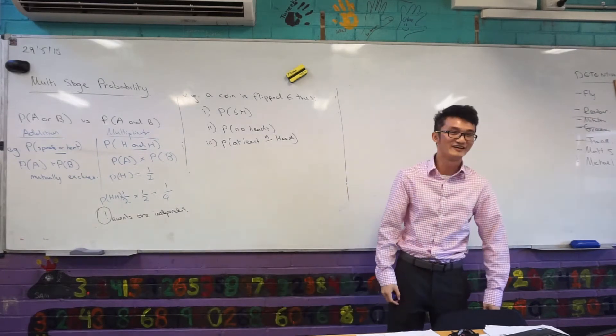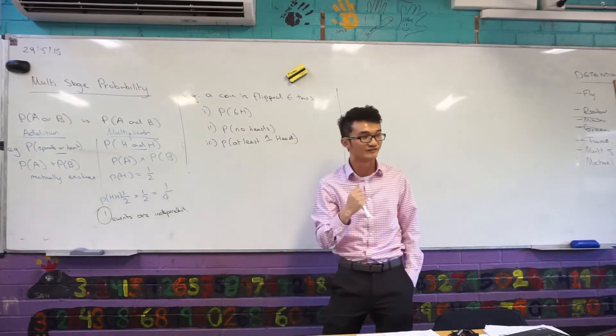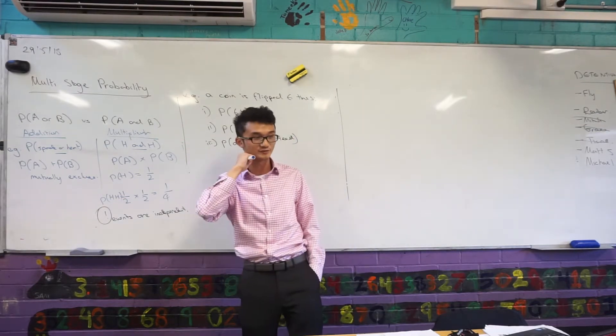Now let's think about this one. I've already given you an indication that when we're looking at coin flipping, they're independent events, so I know I'm looking for the multiplication rule here.